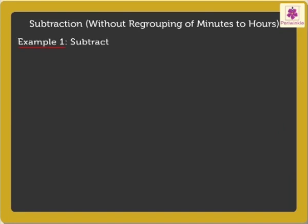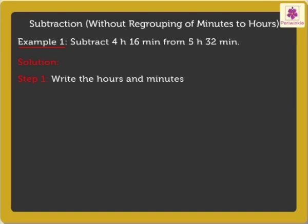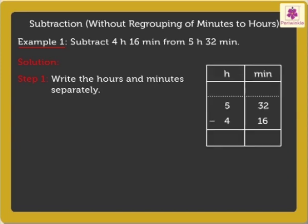Subtract 4 Hours 16 Minutes from 5 Hours 32 Minutes. To solve this, we follow three simple steps. Step 1: Write the hours and minutes separately. Step 2: Subtract the minutes. Subtracting 16 Minutes from 32 Minutes, we get 16 Minutes.